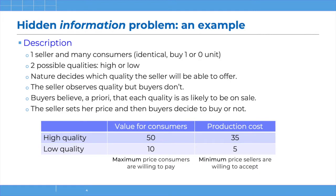Let us start with the hidden information problem with a very simple example. We have one seller and many consumers. All these consumers are identical and they decide to buy one unit of the product or not. There are two possible qualities for the product — high or low — and before the game starts, nature decides which quality the seller will be able to offer. For now we assume that the seller doesn't choose the quality of the product.